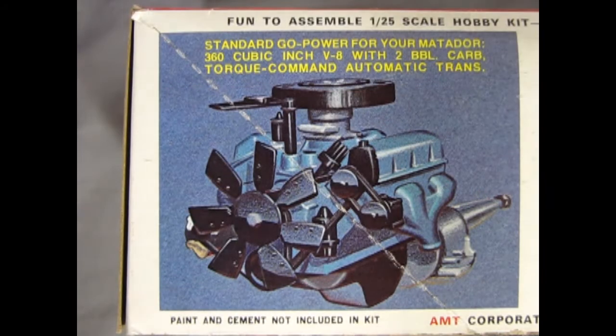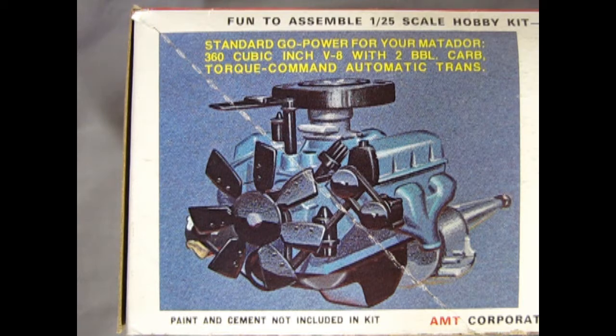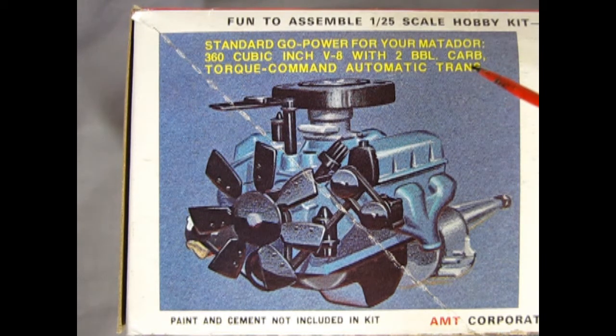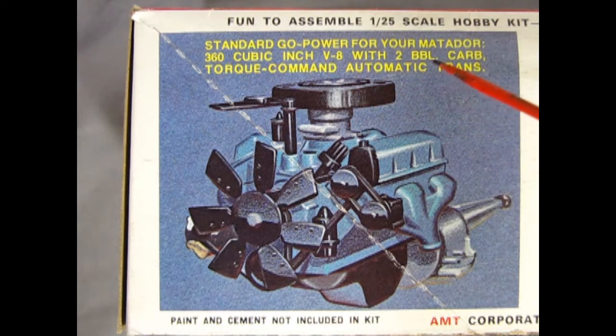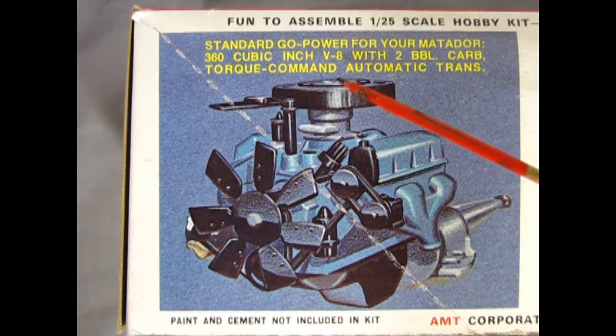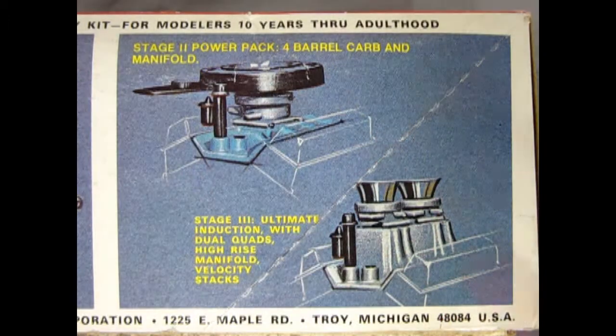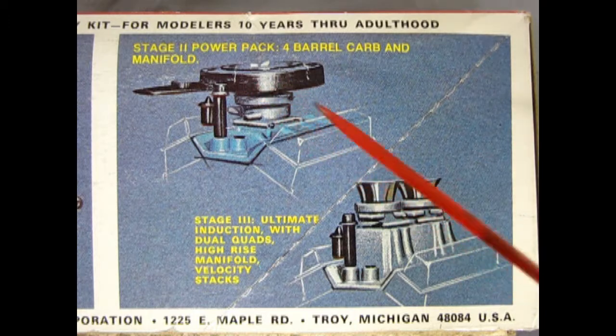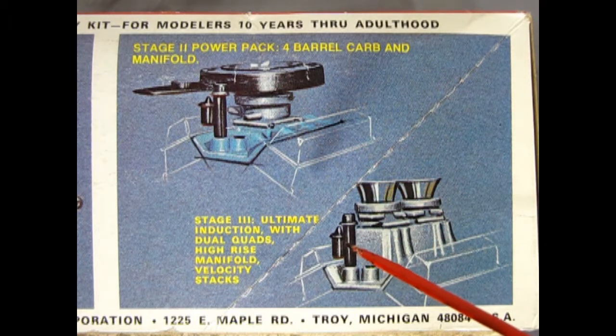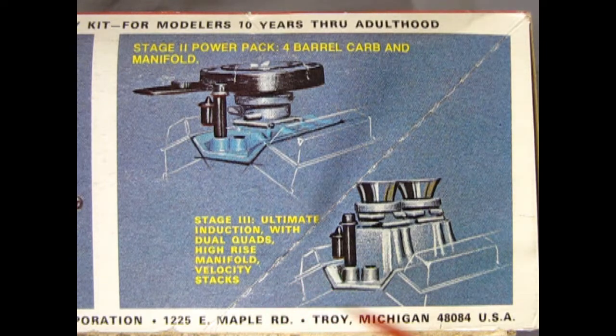Fun to assemble 1/25th scale hobby kit for modelers 10 years through adulthood. And here you can see it's got the standard go power for your Matador 360 cubic inch V8 with two barrel carb, Torque Command automatic transmission. You can also build this model as a stage two power pack with a four barrel carburetor and manifold, or as the stage three which is the ultimate induction with dual quads high-rise manifold velocity stacks.